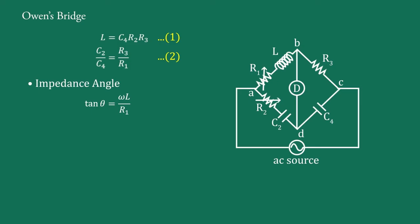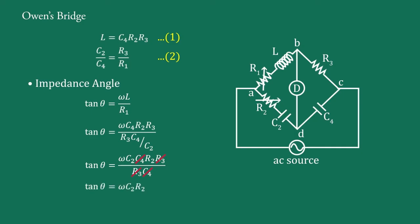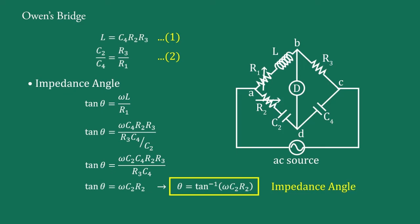For a series R1-L connection, the impedance angle theta is written as tan(theta) equal to omega·L upon R1. Substituting the value of L from equation 1 and R1 from equation 2, we get tan(theta) equal to omega·C4·R2·R3 upon R3·C4/C2. The C4 and R3 terms cancel, therefore tan(theta) equal to omega·C2·R2, and hence theta equal to arctan(omega·C2·R2). This is the impedance angle.